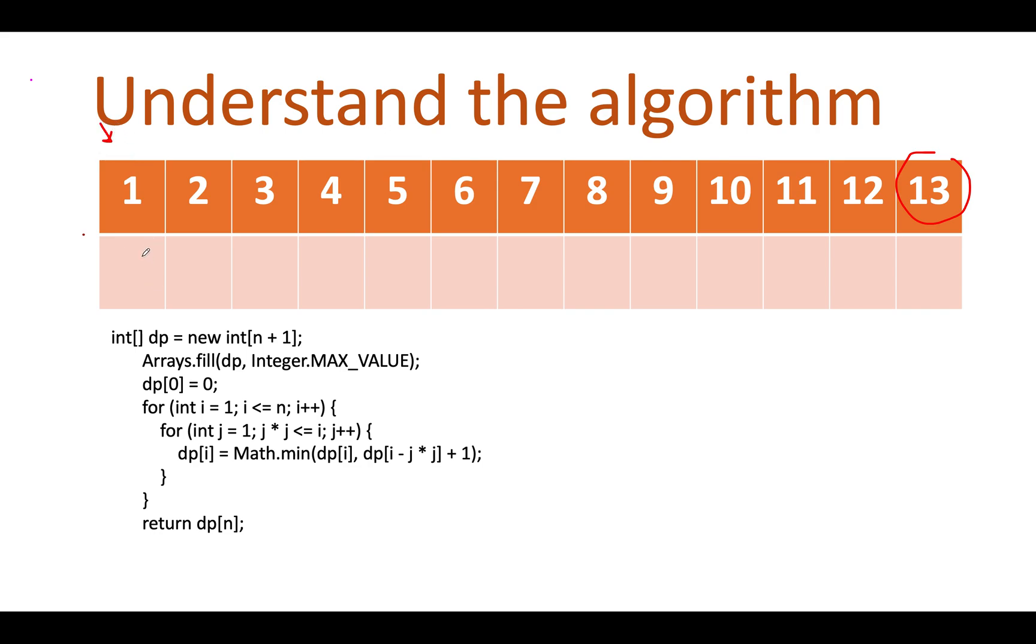So at one, we are already aware that there is only one possible way. So we'll go and write one there. Let's move the pointer to the next iterator. We have two. Now when i iterator is pointing to two, we'll create another for loop starting from j equals to one till the time my j square is less than equal to i which in this case is two.